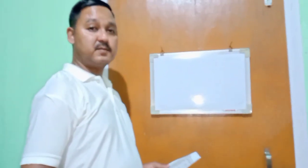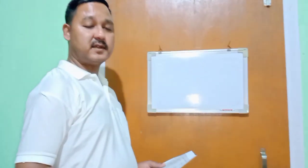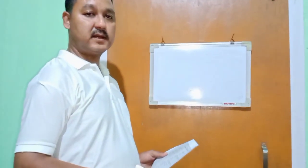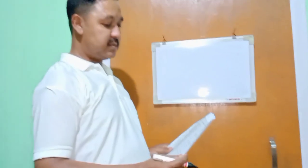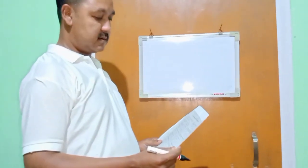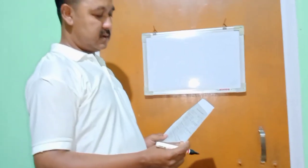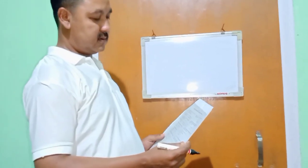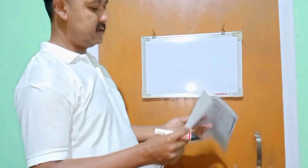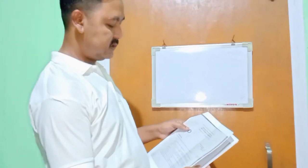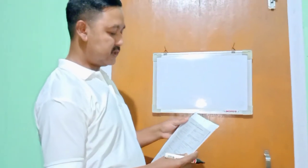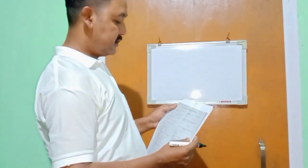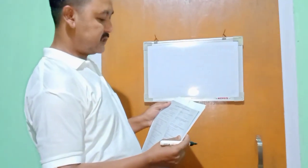Hello everyone, welcome to my channel. This is the ABBN Constable D Series. This is part 1.4. This is English, elementary and basic knowledge. Question number 1.